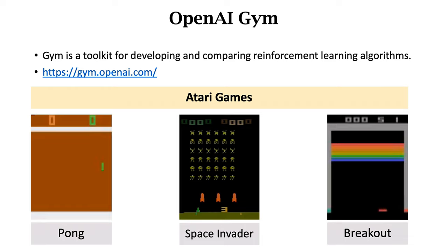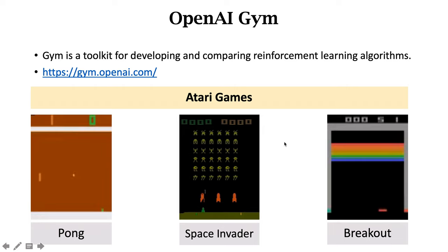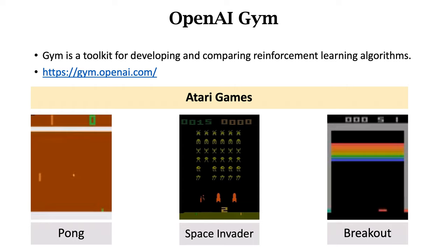Atari games are the second kind of problems and are the most popular. In Pong, you control the paddle — the agent — and can move it vertically. The goal is to hit the ball and make the opponent fail to return it. In Space Invader, you control a laser cannon by moving it horizontally across the bottom of the screen and firing at the descending aliens.